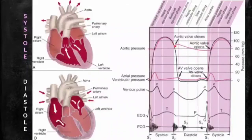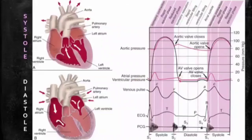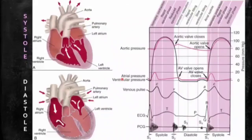The second heart sound S2 has two components: A2, produced by aortic valve closure, and P2, produced by pulmonic valve closure. As ventricular pressure falls below atrial pressure, the mitral and tricuspid valves open to allow blood collected in the atria to refill the relaxed ventricles. Diastole is a relatively passive interval until ventricular filling is almost complete. This filling sometimes produces a third heart sound, S3. The atria then contract to ensure ejection of any remaining blood, which can sometimes be heard as the fourth heart sound, S4.